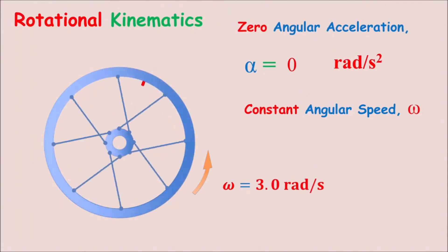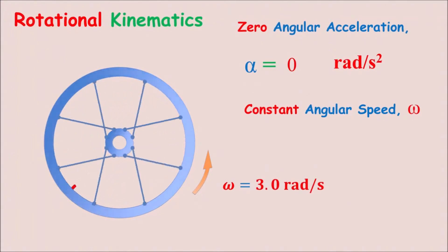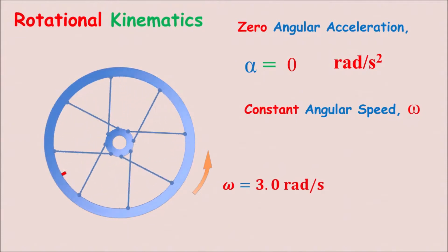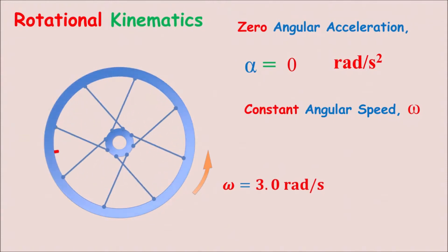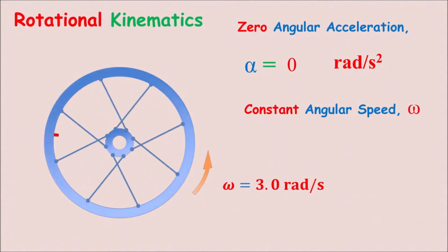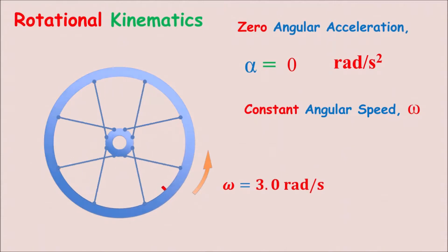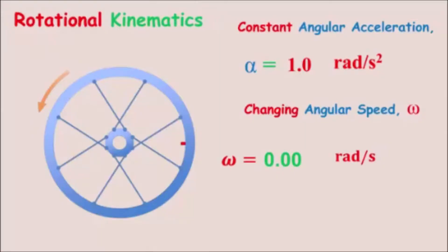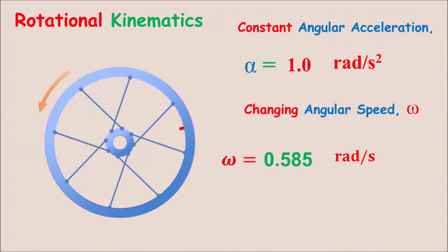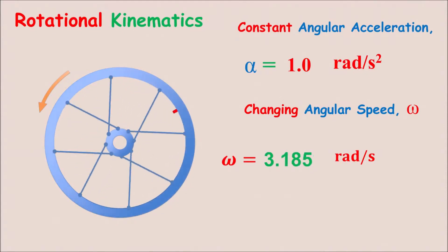Notice that in the previous animations, the angular velocities were all constant, so angular accelerations were all zero. Now we will have examples with non-zero angular acceleration and different initial angular velocities. First, a couple of examples with zero initial angular velocity where the wheel starts from rest. This one has an angular acceleration of 1 radian per second squared — notice the angular velocity omega increases by about 1 rad/s each second.